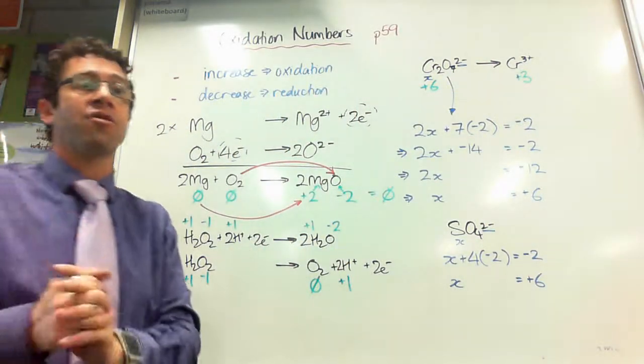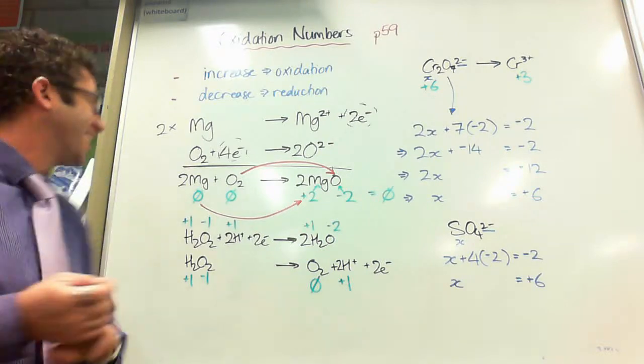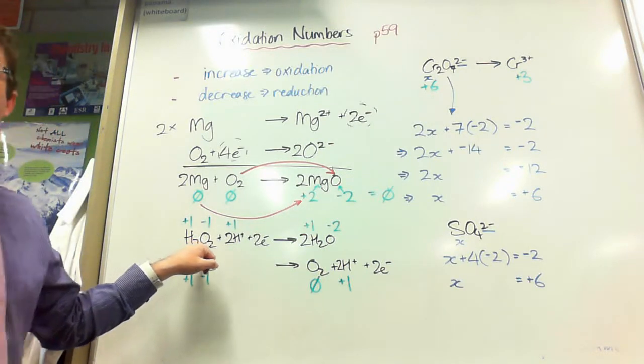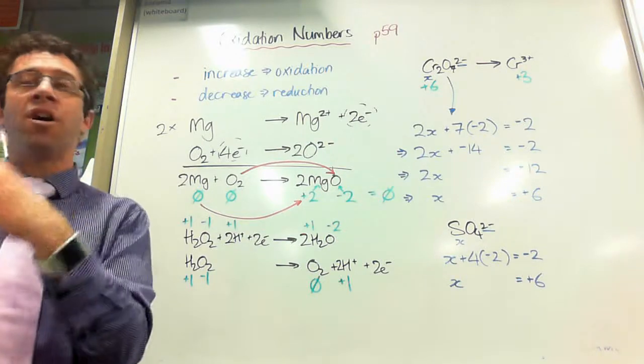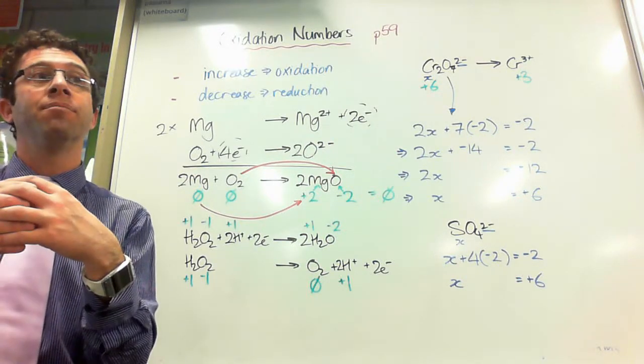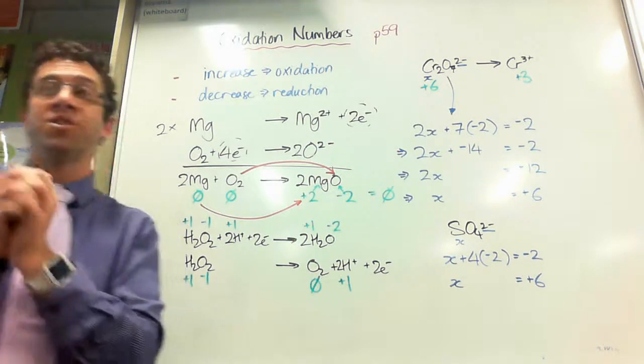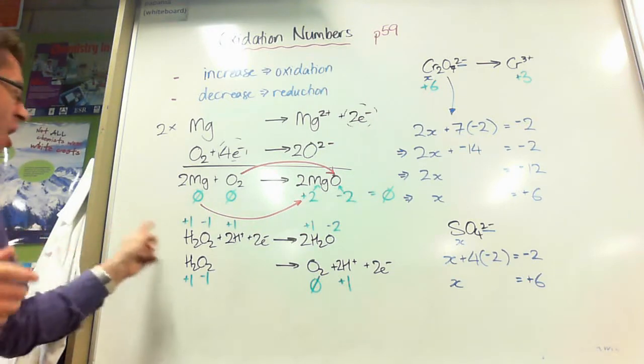Rule number three, which is a very important one. Except in H2O2, any oxygen in a compound or an ion is negative 2.